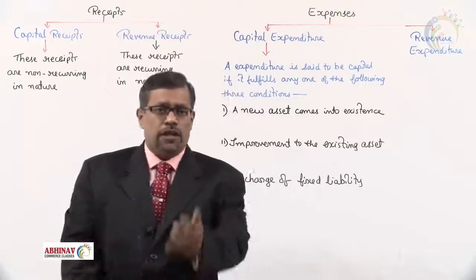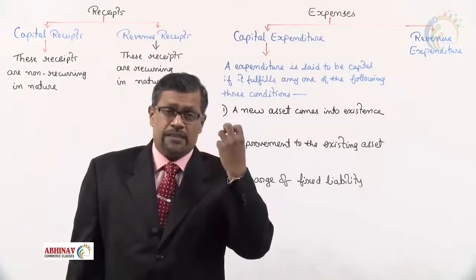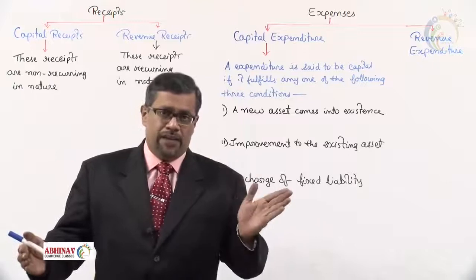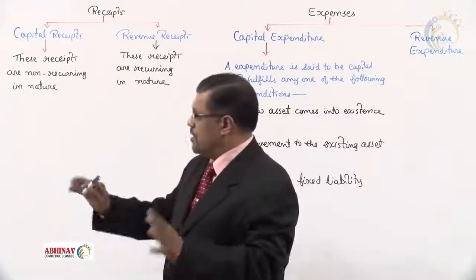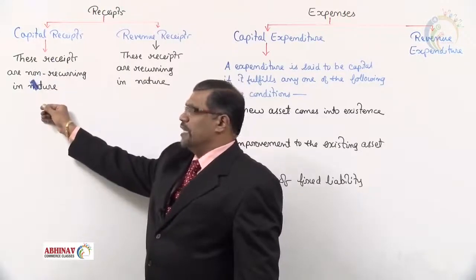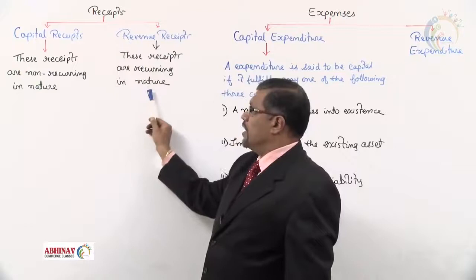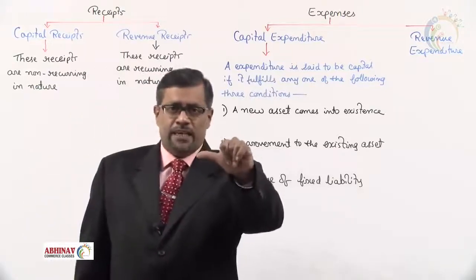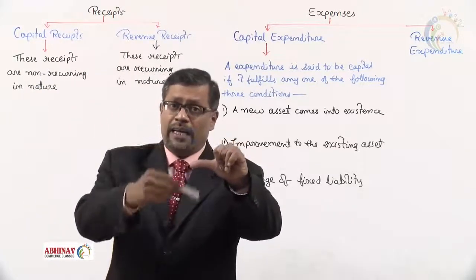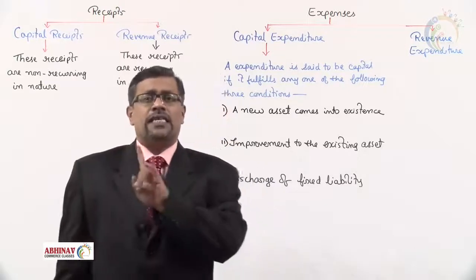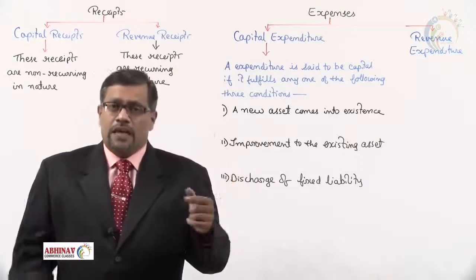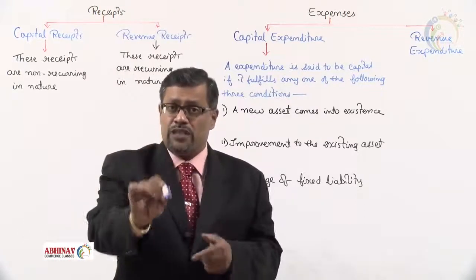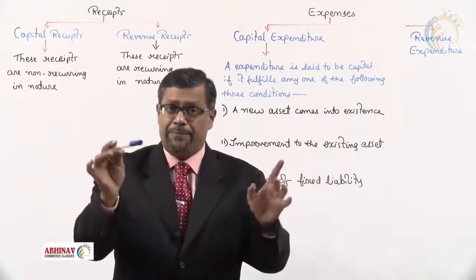Receipt means income — the money that is received by the organization, we call it a receipt. It may be a capital receipt or a revenue receipt. Capital receipts are non-recurring in nature. Revenue receipts are recurring in nature. Non-recurring means the receipt which is received only once; we don't get that income again and again from the same person or source. Revenue receipt means the income that is received again and again from the same source.